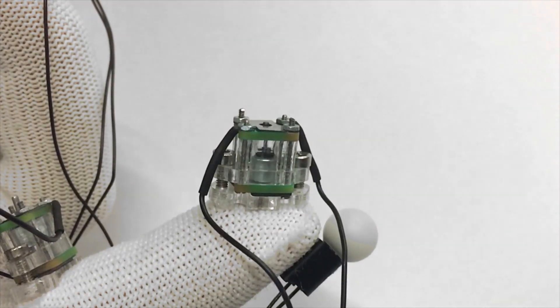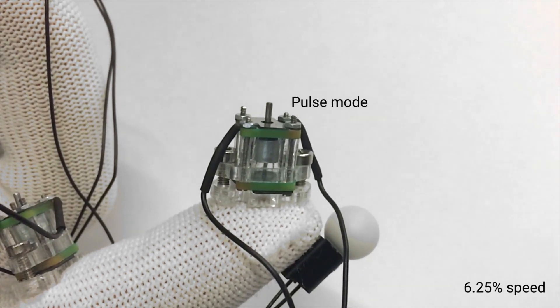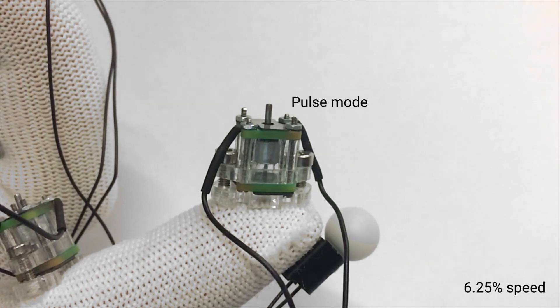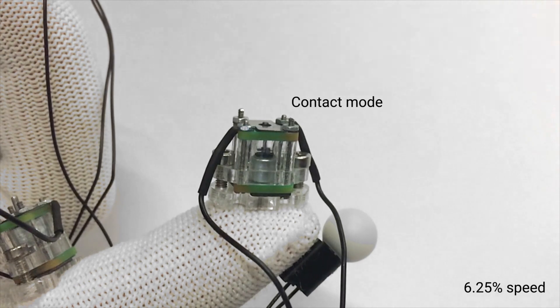An asymmetric latching mechanism enables two different modes of actuation. In pulse mode, the pin moves towards the skin for 3 milliseconds and then retracts immediately without touching the skin. In contact mode, the actuator pin makes contact with the skin.